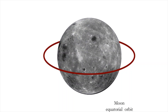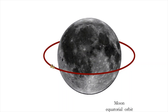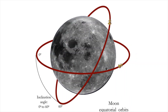the spacecraft orbits near the lunar equatorial area. The spacecraft's orbital plane may have an inclination with respect to the lunar equatorial plane. Orbits with an inclination between 0 to 60 degrees are called equatorial orbits.